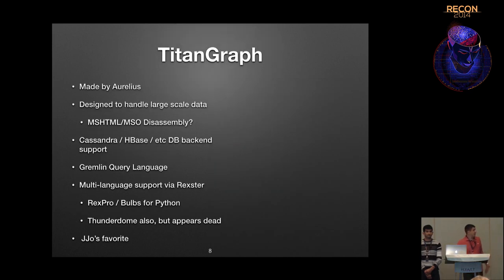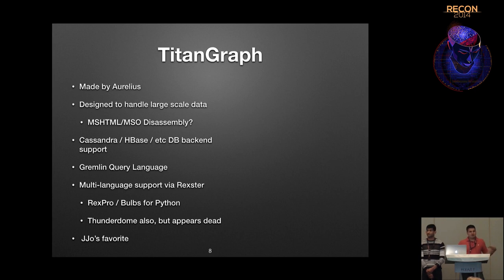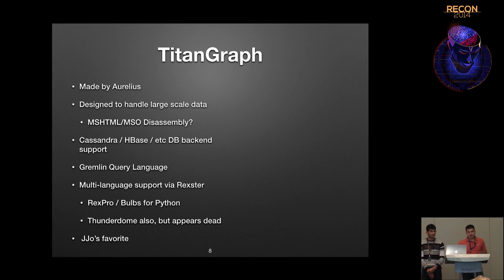There's another one called Titan Graph from a company called Aurelius, which has a much better chance of being applicable to reverse engineering. Marco Rodriguez is the main architect — a really smart guy who does a lot of work in graph theory. It's designed to handle large-scale data, so you can have a Cassandra cluster on the back end, or use HBase. If you've ever loaded MSHTML or MSO into IDA and know how long that takes, it would be cool to have something offline to crunch that and throw it into Titan. They have a query language called Gremlin, which I have examples of on the next slide.